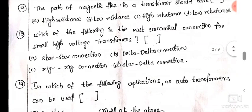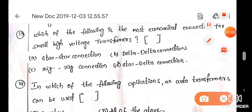Which of the following is the most economical connection for small high voltage transformers? The most economical connection for small high voltage is the 13th star by star connection.